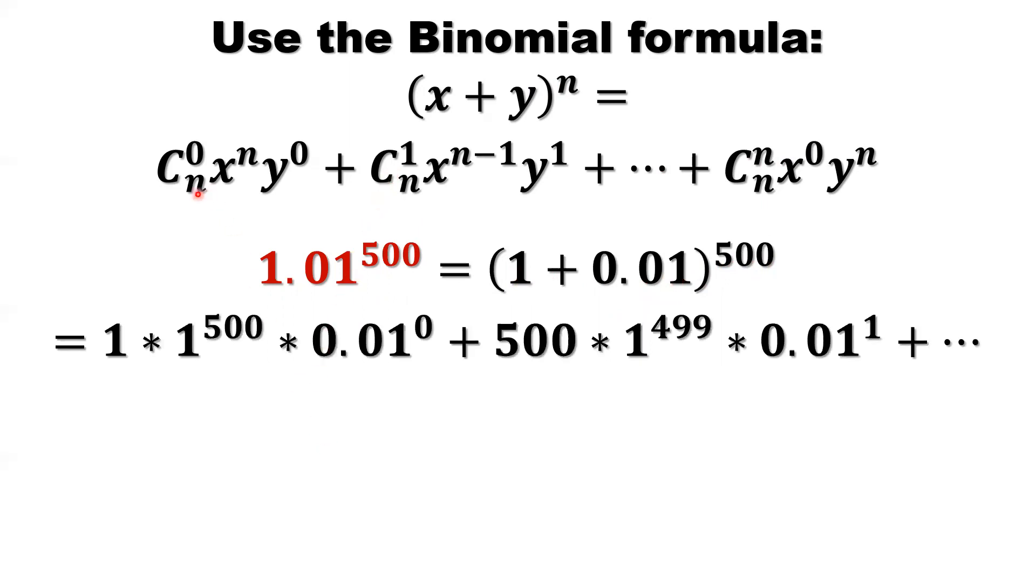Now here the first number is C_500^0, which is 1. Whatever number is here, if the exponent is 0, it's always 1. x is 1 to the power n, 500. That's 1 to the power of 500, which is 1. y is 0.01 to the power of 0. Anything positive to the power of 0 is 1. So 1 times 1 times 1 is 1. So first part is 1.